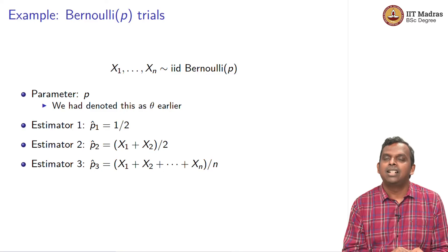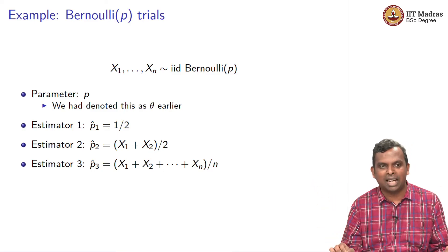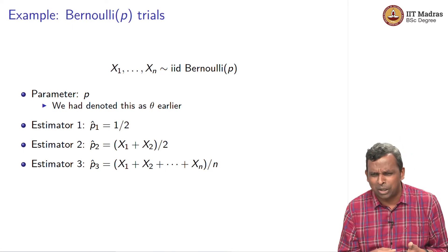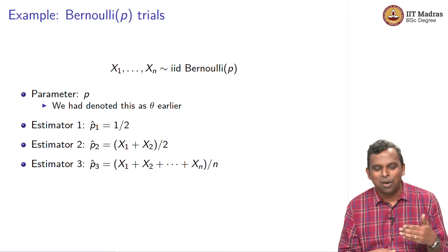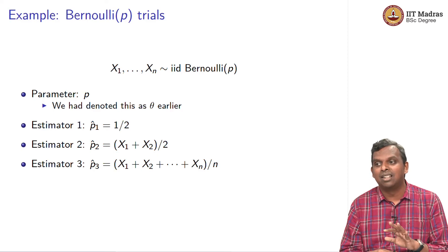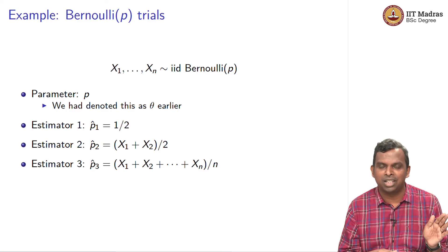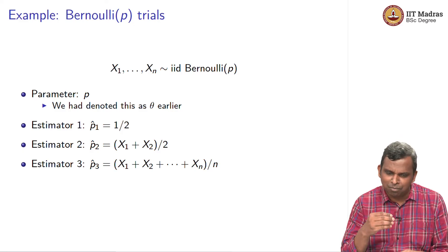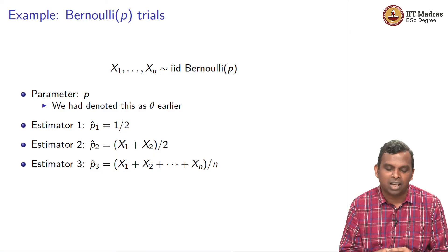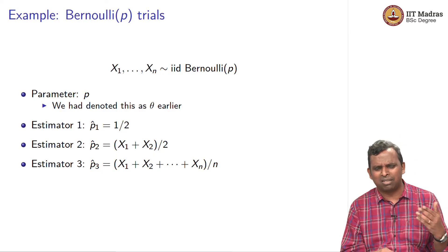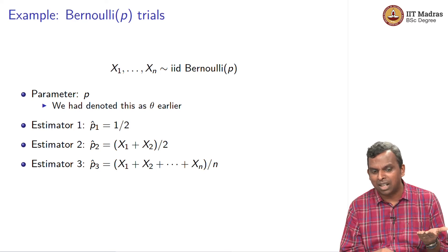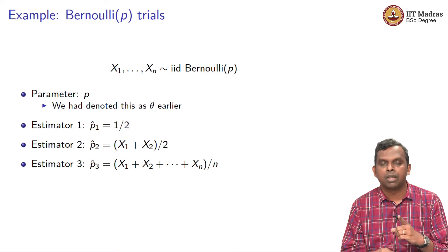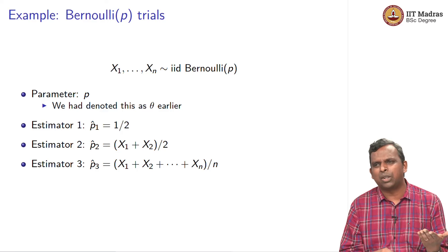Look at the first one, p1 hat — it is just 1/2. I do not care what the samples are, I will not even look at the samples, I will simply say p equals 1/2 always. It does not sound like a good estimator. A good estimator presumably will use the samples, so this one does not look good, but it is still a valid estimator. Estimator 2 sounds a little bit better — it is at least using the first two samples: x1 plus x2 divided by 2. But it is only using two samples. Immediately you should think: there are n samples given to you, you should probably use all n samples, because p affects every sample.